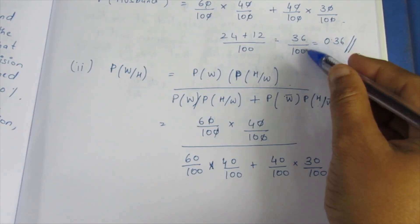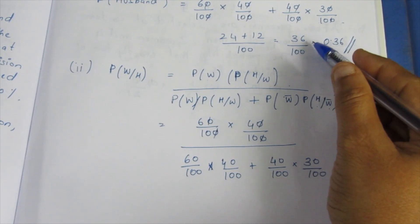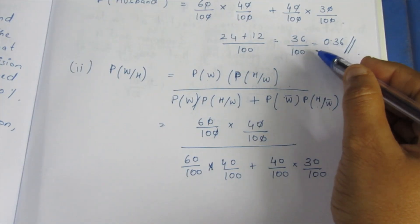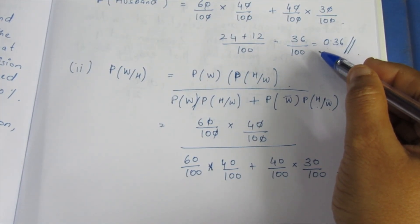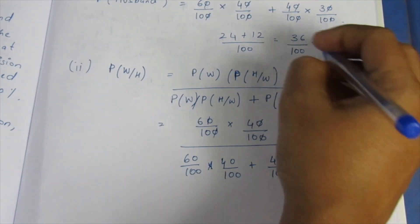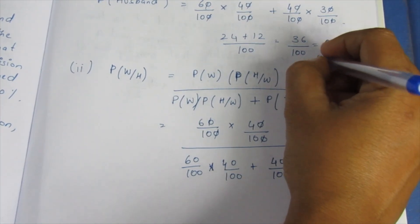After cancelling the sum, the answer is 9 by 25.